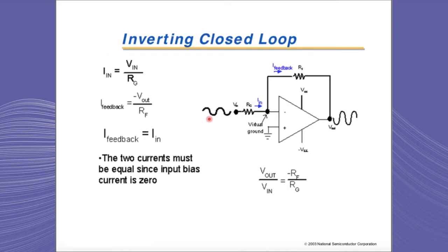The negative sign indicates that the output signal is completely out of phase with the input signal. The input current is V-in over RG. Setting these two currents equal, we find the gain relationship: V-out over V-in equals negative RF over RG. This is the operational amplifier's closed-loop gain, where the negative sign indicates the input and output signals are completely out of phase with each other.